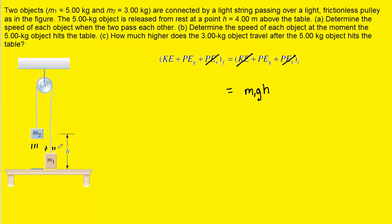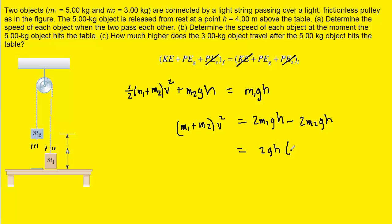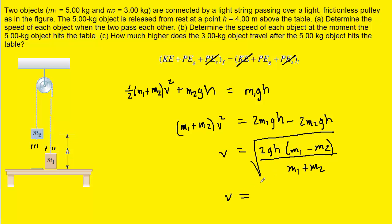In the final state, both objects are moving, so we combine them: one-half times the combined mass times speed squared. The only gravitational potential energy present is that of m2, which is m2 times g times h. Solving for v, we multiply every term by 2, subtract 2m2gh to the right, factor out 2gh to get m1 minus m2, then divide both sides by m1 plus m2, and take the square root. Plugging in known values, we get approximately 4.43 meters per second — the correct answer to part B.